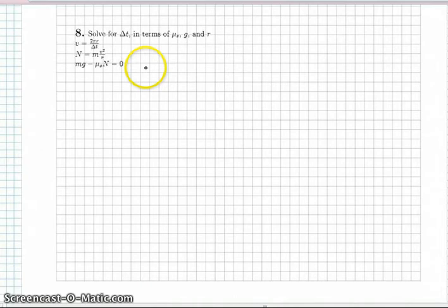So I'm going to eliminate, let's see, v and n and m, it looks like. So I'll start with n since that's by far the easiest to sub in there. It's already solved for. So I'll sub it into the third equation.